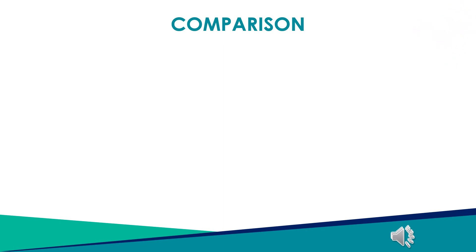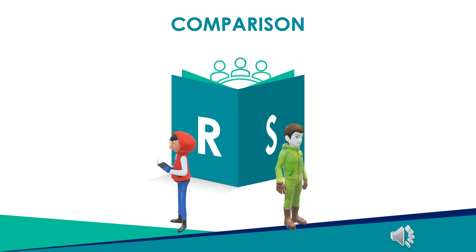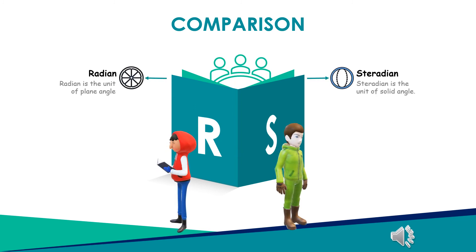Now both of you compare Radian and Steradian. Radian is the unit of plane angle. Steradian is the unit of solid angle. Radian is equal to length of arc divided by radius of circle. Steradian is equal to area of cross section divided by square of radius.